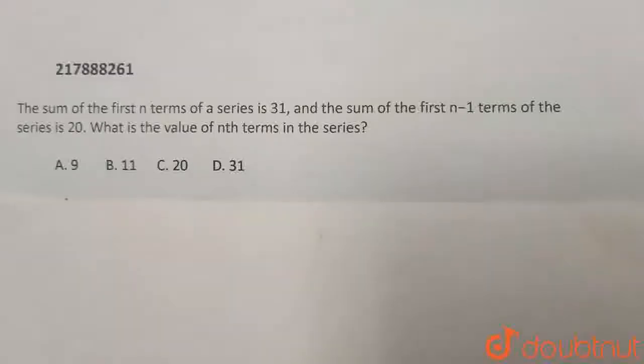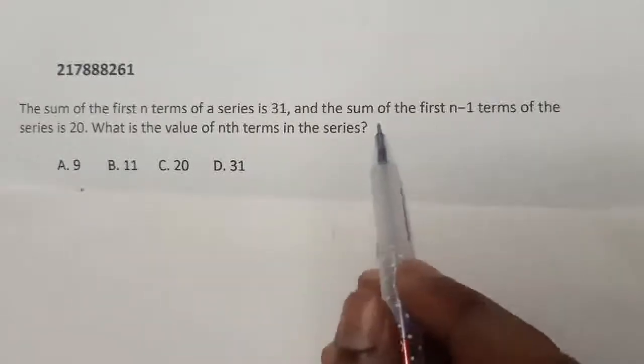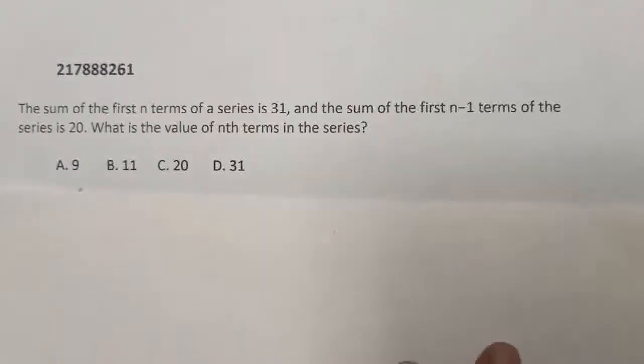Hello everyone, so the question is the sum of first n terms of a series is 31, and the sum of the first n-1 terms of the series is 20. Then what is the value of the nth term in the series?